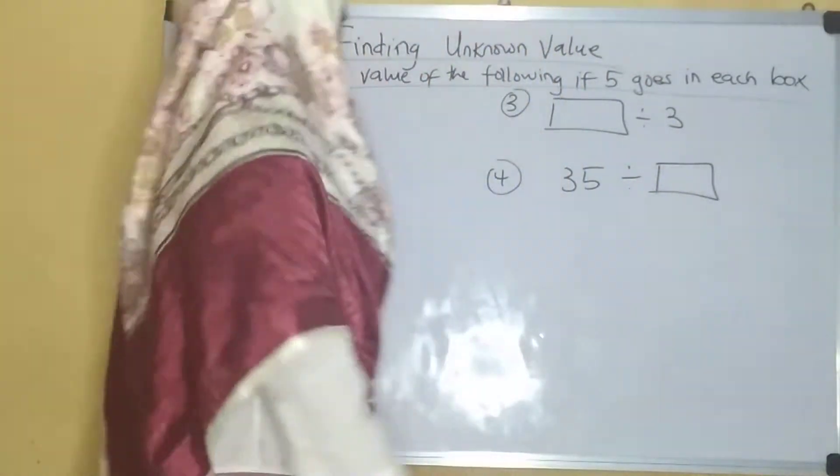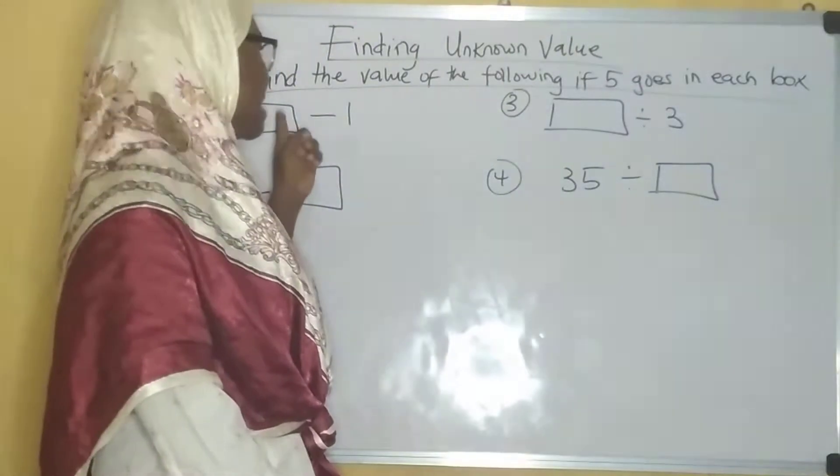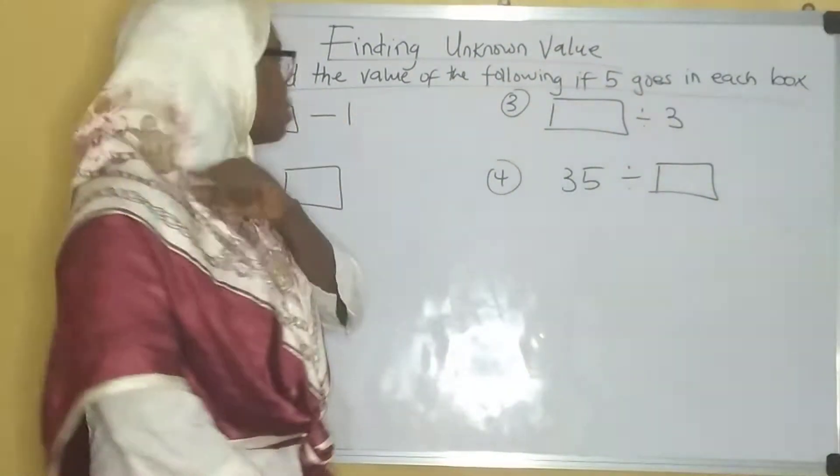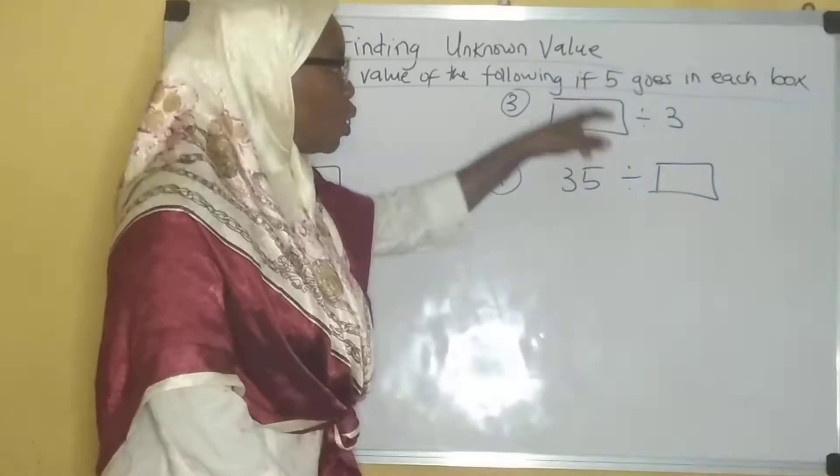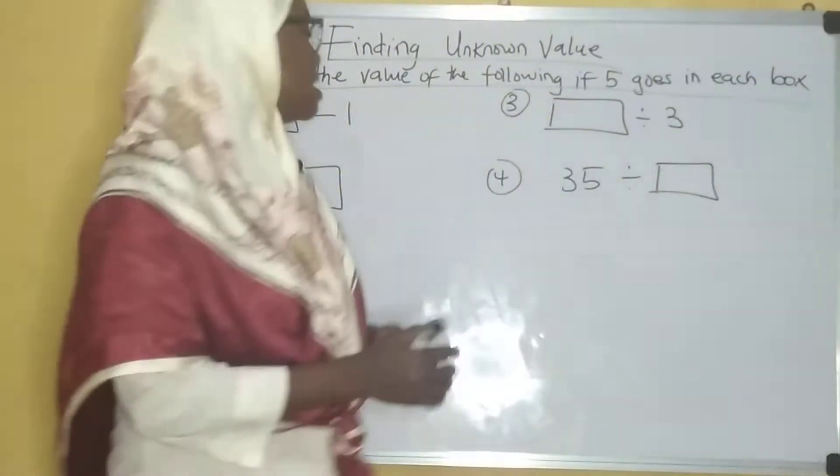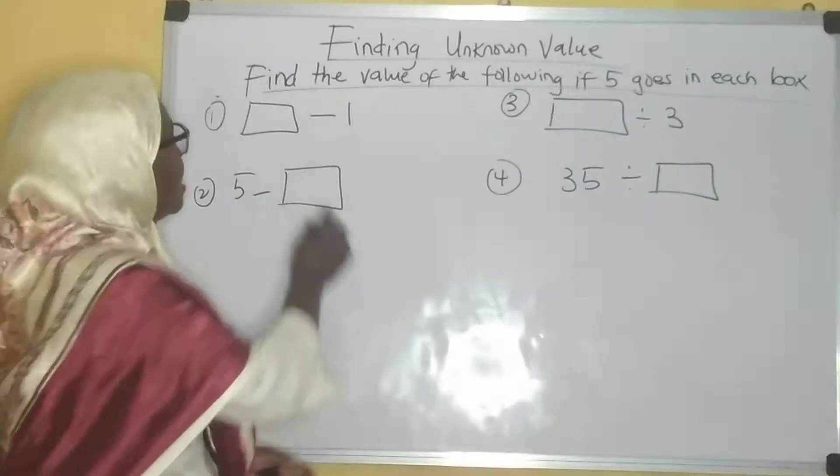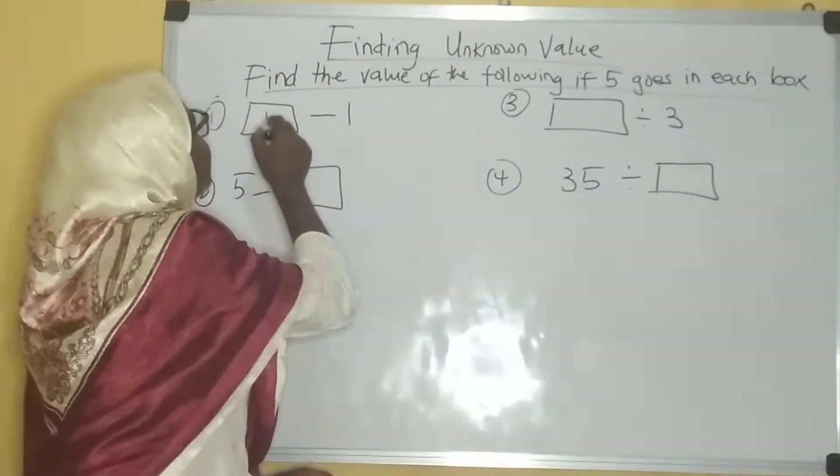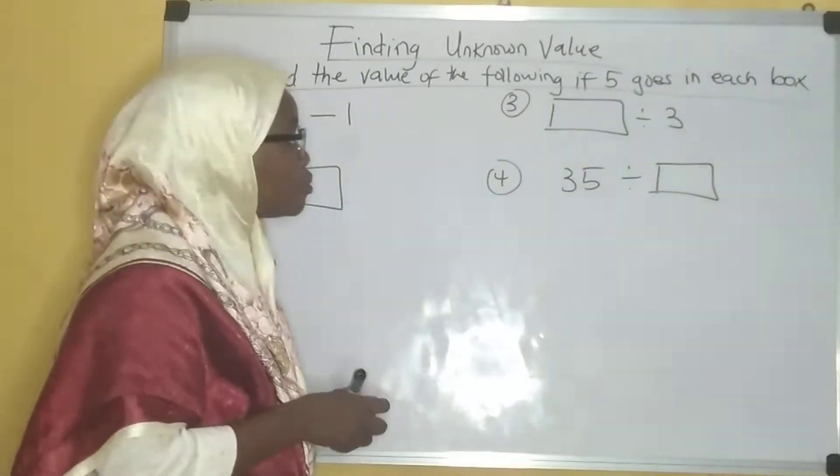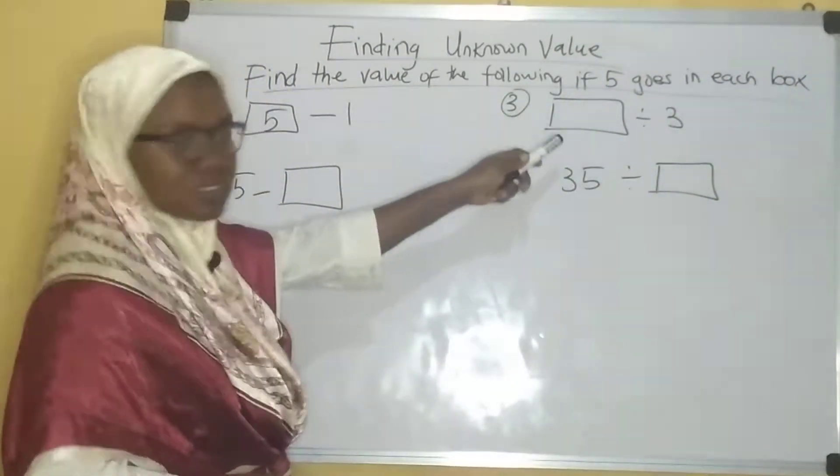Now let's delve into this properly. The first question is box minus one. We want to find the value of the following if five goes into each of this box. The first box that I have here is box minus one, so let's see if I put five here based on the instruction.